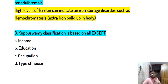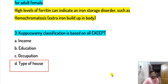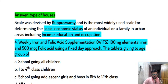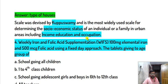The Kuppuswami classification is based on income, education, and occupation. It is a scale used to measure socioeconomic status in urban areas. The three components of the Kuppuswami scale are income, education, and occupation.